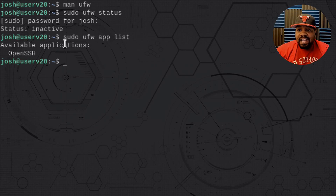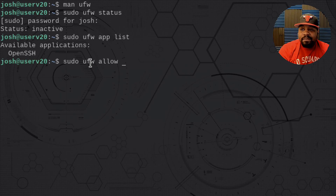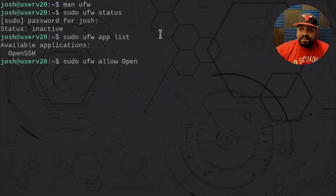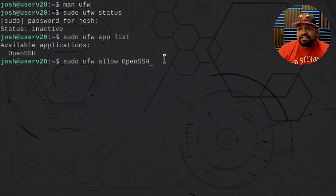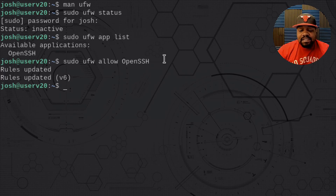You can use the application name to simply enable the rule for OpenSSH. The command is sudo ufw allow OpenSSH — type it exactly as it's spelled there, with the capital SSH. Press enter and that will actually add that rule. Now that we have that rule enabled, it's safe to actually enable the firewall.